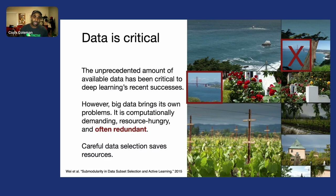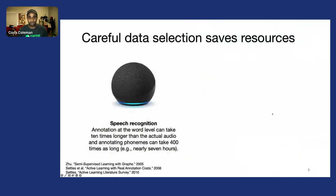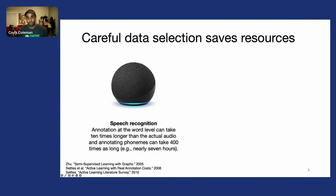But if we're instead careful about the data points that we actually choose to label and train on, we can save valuable resources. To give a sense of how costly this data can be, let's look at speech recognition. Annotation at word level can actually take 10 times longer than the audio clip.